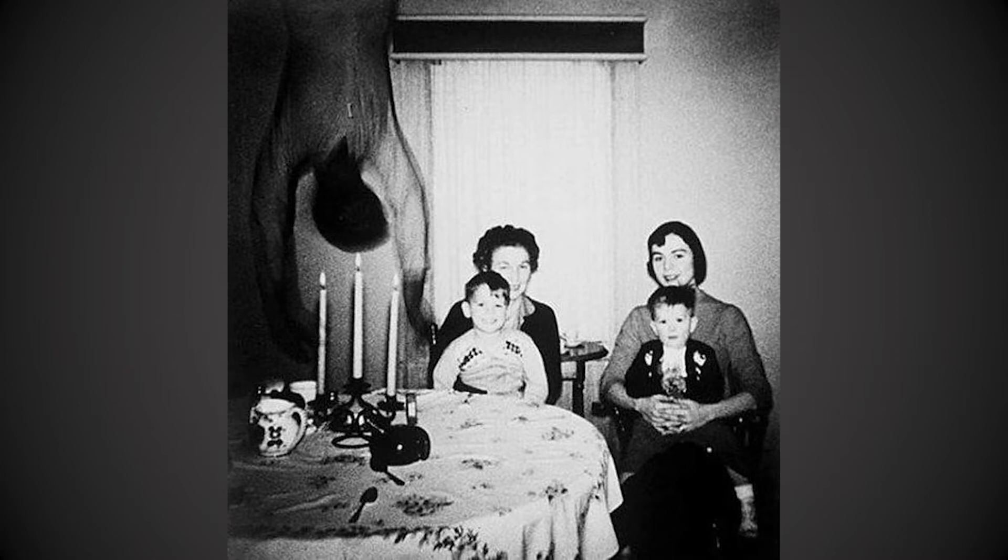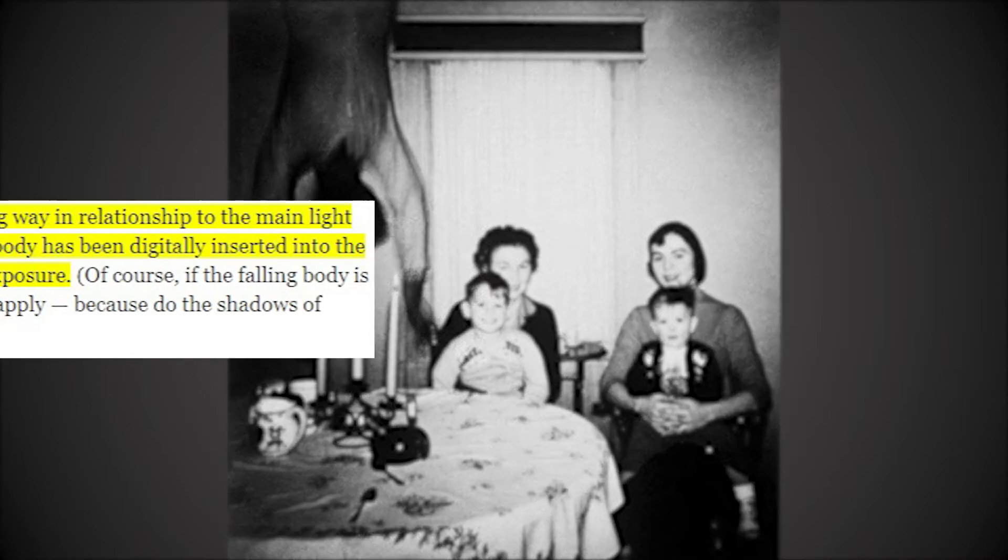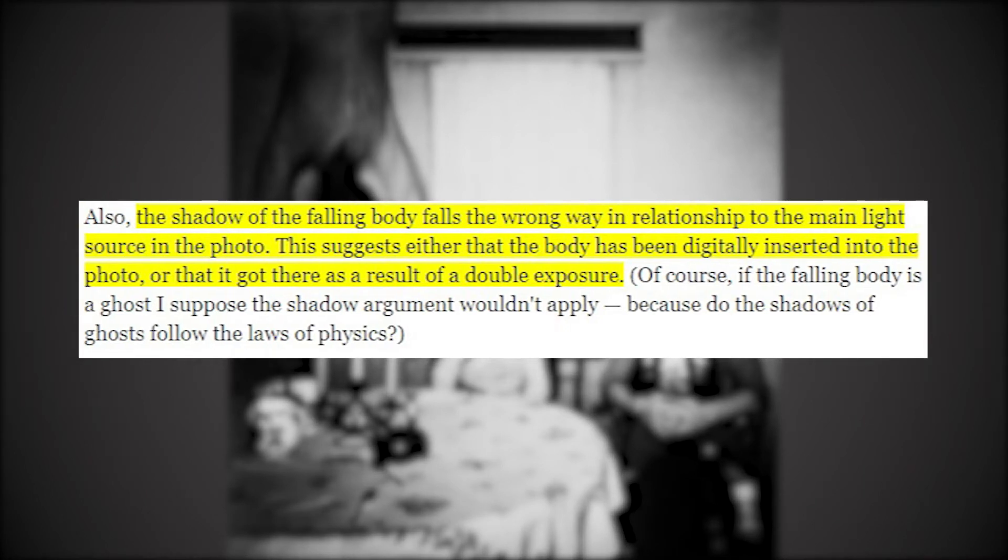He stated that it also seemed like there was some digital forgery going on there, and the shadow from the falling body falls the wrong way in relation to the main light source in the photo. This suggests either that the body has been digitally inserted into the photo or that it's a result of double exposure.